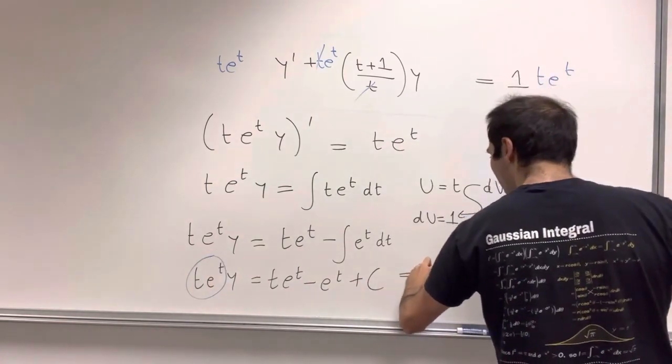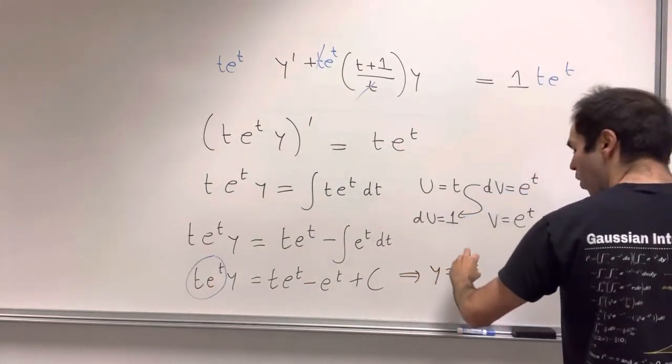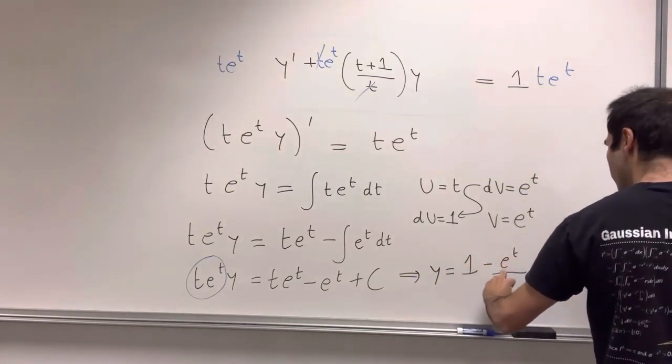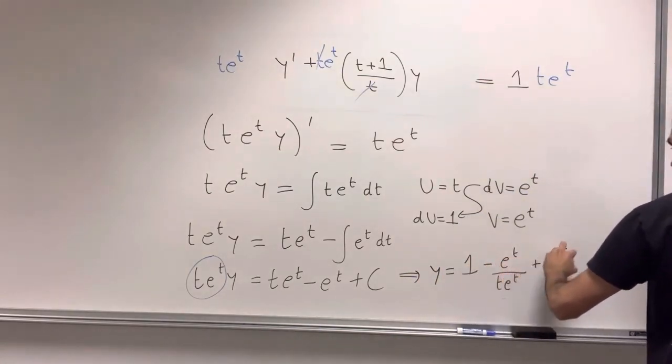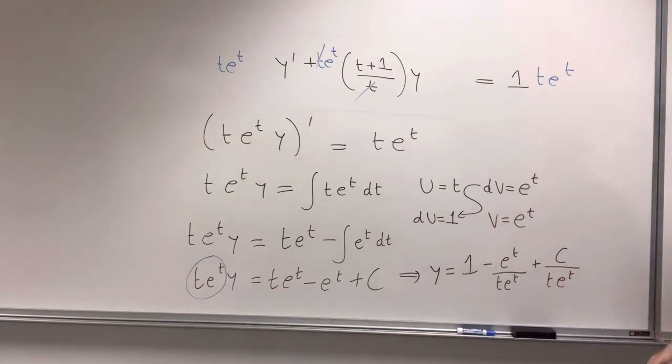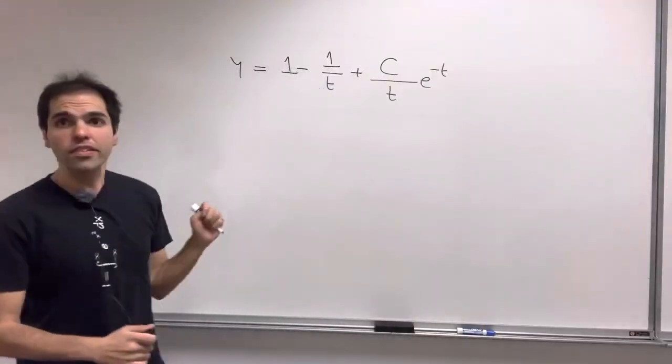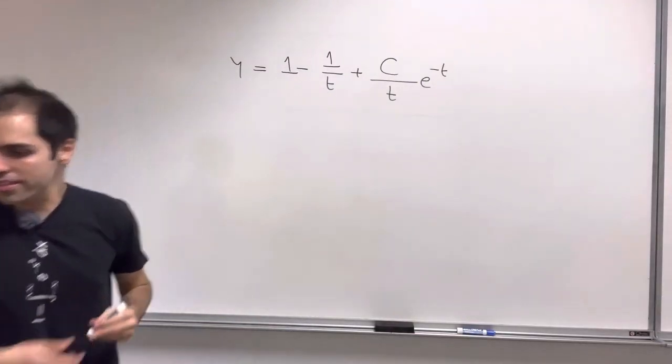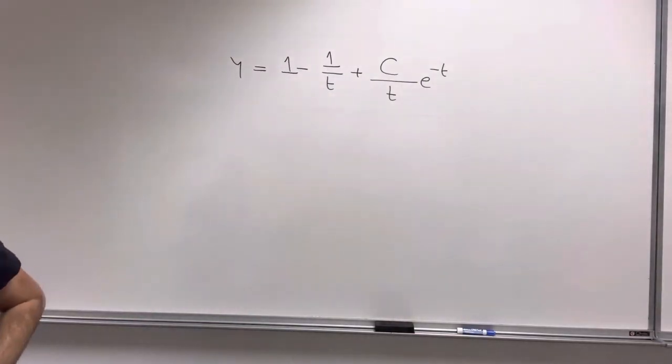I believe y is 1 minus e^t/(t*e^t) plus C/(t*e^t), which then you can simplify as follows. So this then becomes y is 1 minus 1/t plus C/(t*e^t).